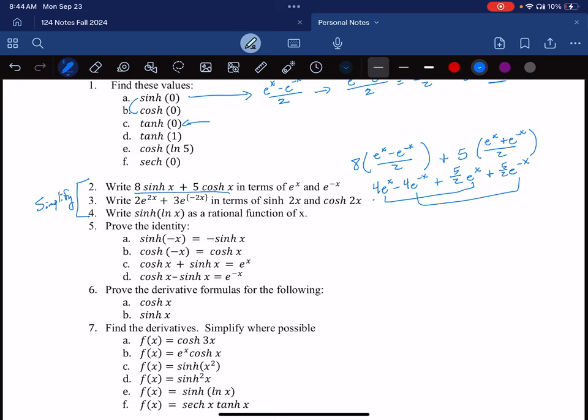So four plus five halves should be 13 halves. Or maybe I'll just go, like in my head, I'm just thinking of these as eight halves that I originally had. So I have 13 halves e to the x. And then here I have five halves minus eight halves, so that would be minus three halves e to the minus x.